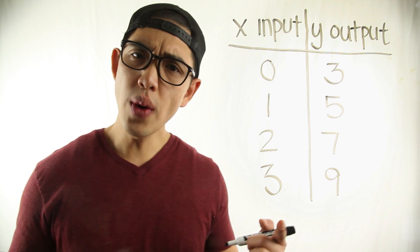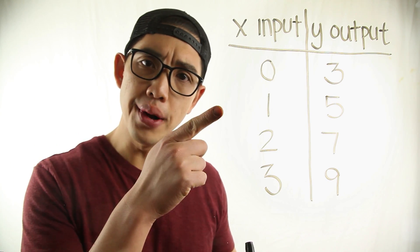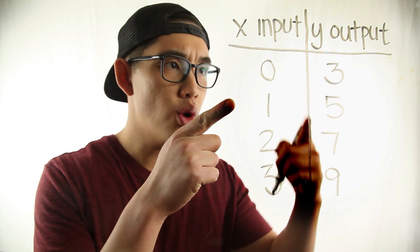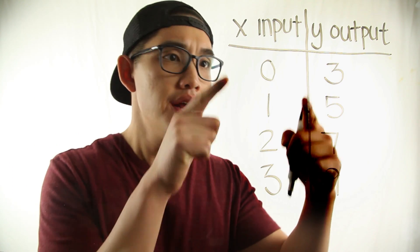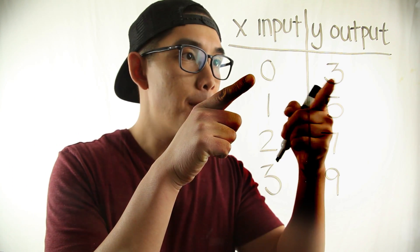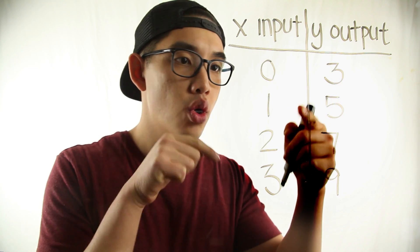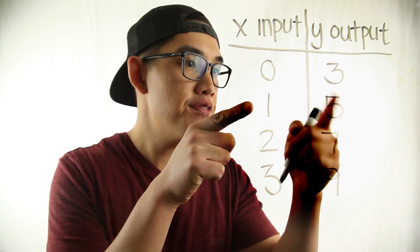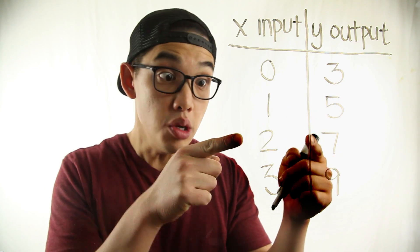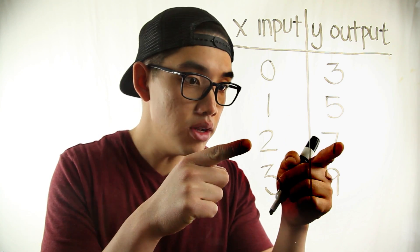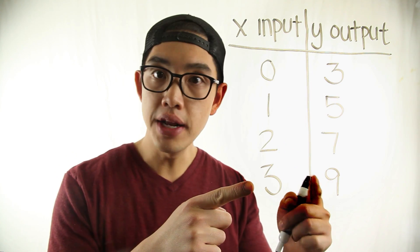So as you can see, every time I put in an input there is exactly one output: input 0 gives output 3, input 1 gives output 5, input 2 gives output 7, and input 3 gives output 9.